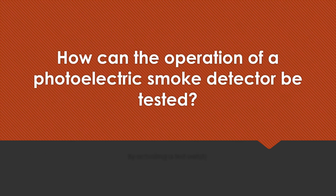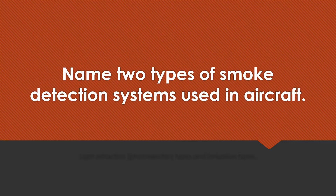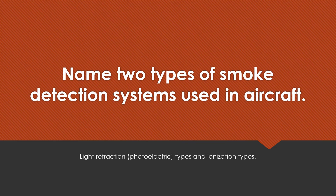How can the operation of a photoelectric smoke detector be tested? By actuating a test switch. Name two types of smoke detection systems used in aircraft. Light refraction, also known as photoelectric type, and ionization types.